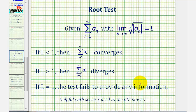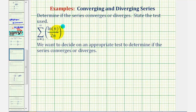Going back to our example, we want to find the limit of the nth root of a sub n. Notice how we can ignore the absolute value, because if n is equal to one, this fraction will never be negative.